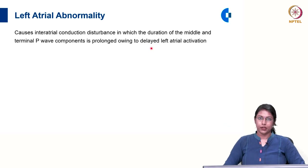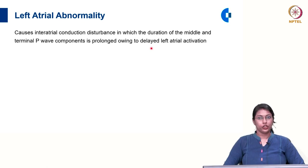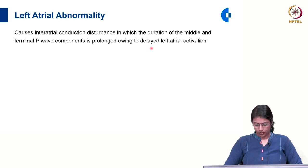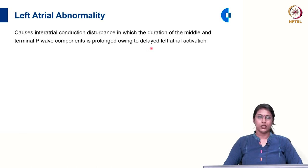Left atrial abnormality, unlike right atrial abnormality, causes inter-atrial conduction disturbance in which the duration of the middle and terminal component of the P wave is prolonged owing to delayed left atrial activation. There is an anti-clockwise shift in the P wave axis, and the P wave axis will be less than plus 30 degrees.